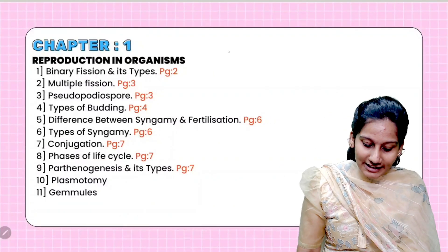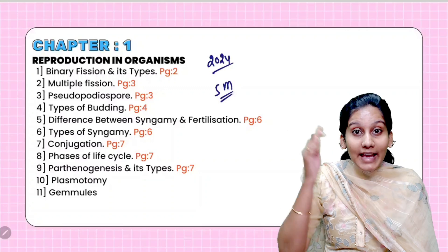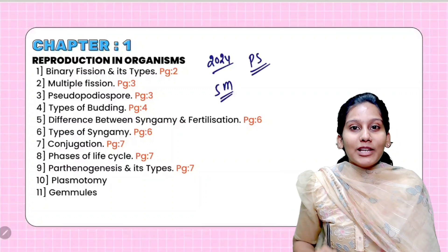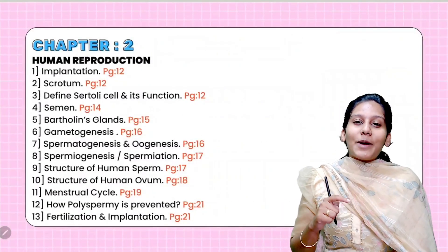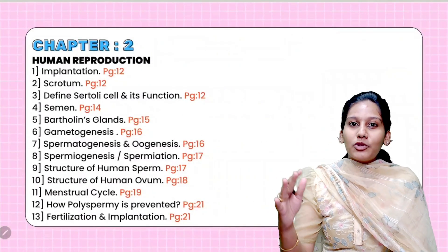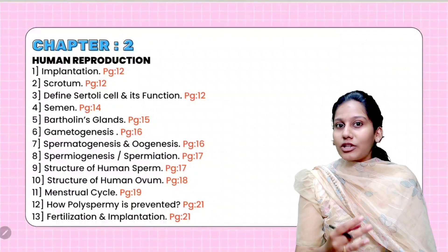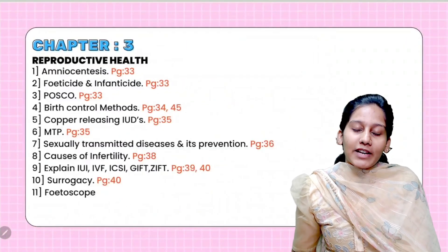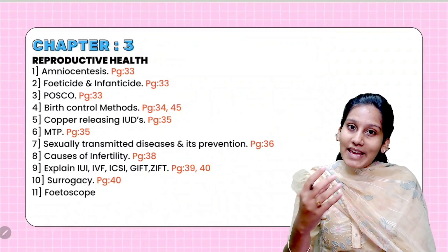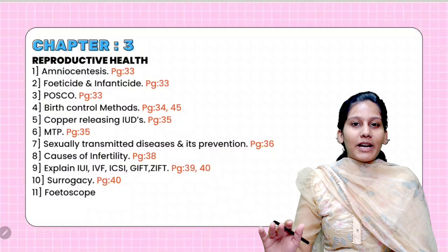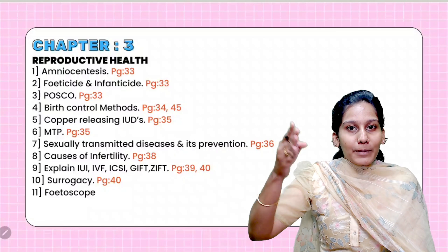Zoology: the first chapter is Reproduction in Organisms. It is notable that in Public 2024, there is a 5-mark question — same for Pure Science and Biomax — on types of syngamy. After that, Chapter 2 Human Reproduction: gametogenesis, spermatogenesis, oogenesis — that is a flowchart character. The diagram of the structure of sperm is most important. Next, Reproductive Health: STDs — the disease-causing agent, preventive measures, and birth control methods — in a table format.